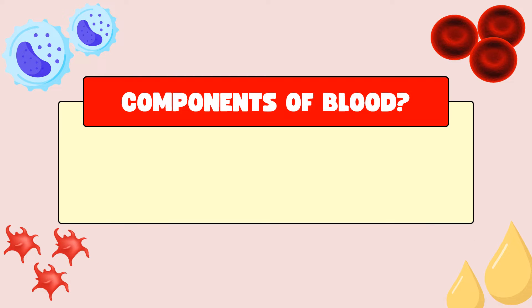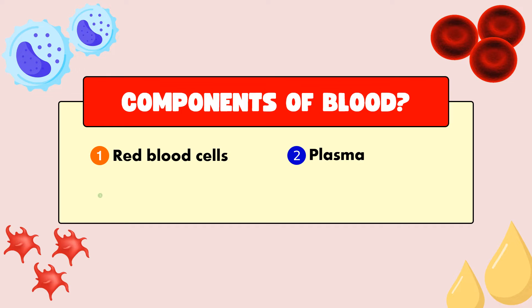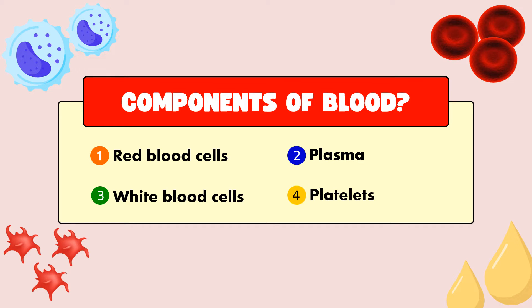Now the components of blood. Blood generally has four components: first is red blood cells or RBCs, then plasma, then white blood cells, and platelets. Now let's discuss all these four components in detail.